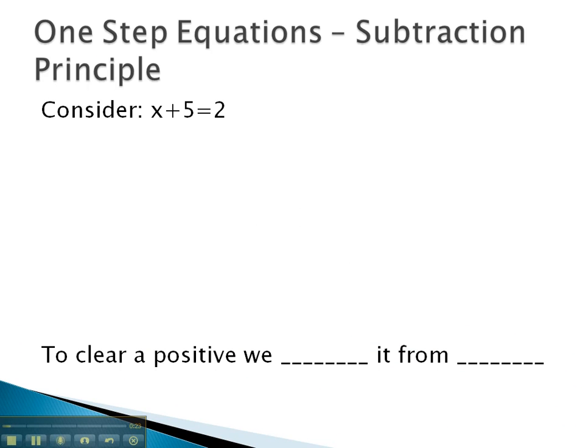To set up the subtraction principle, I want to consider this problem: x plus 5 equals 2. Visually, we've got this x hanging out with 5 positives: 1, 2, 3, 4, 5 positives. And on the other side of the equation, we've got 2, or 2 positives.